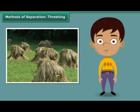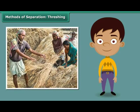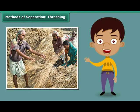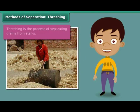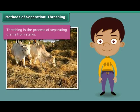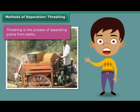You must have seen bundles of wheat or paddy stalks lying in fields after harvest. Have you wondered how a farmer separates the grains from these stalks? Once the wheat or paddy crop is harvested, the farmer ties the stalks together to form bundles, then leaves them to dry in the sun. Once completely dried, the farmer beats them against a hard floor to free the grains. This process of separating grains from stalks is known as threshing. Bullocks, oxen and machines known as threshers are also used for this purpose.